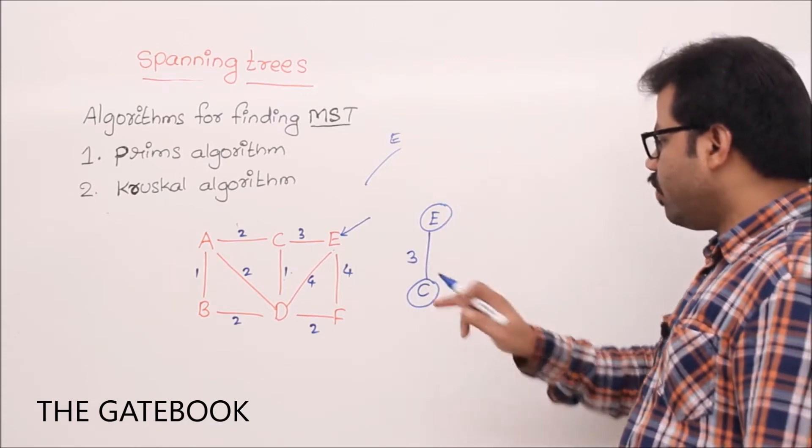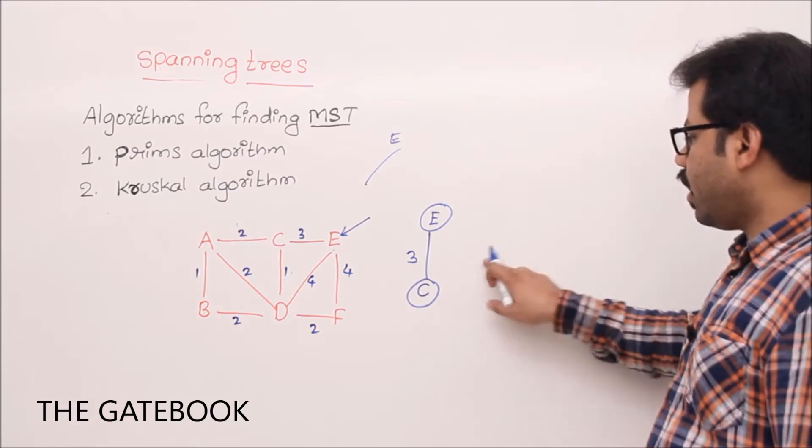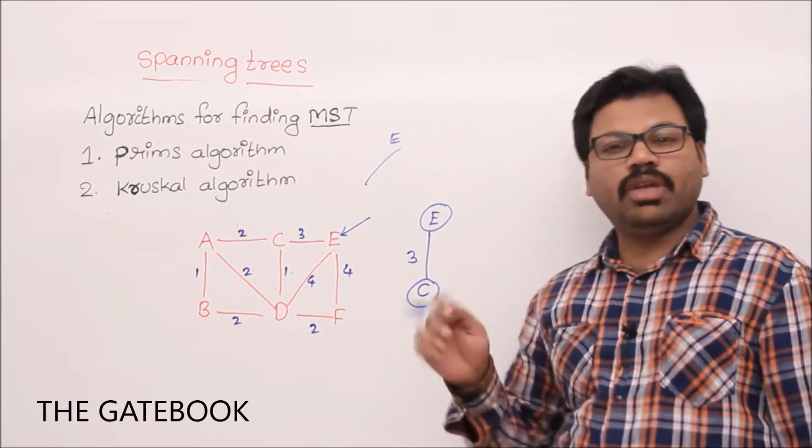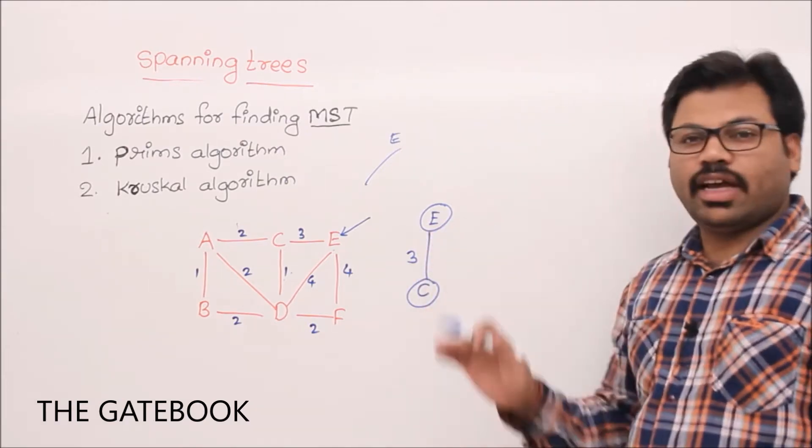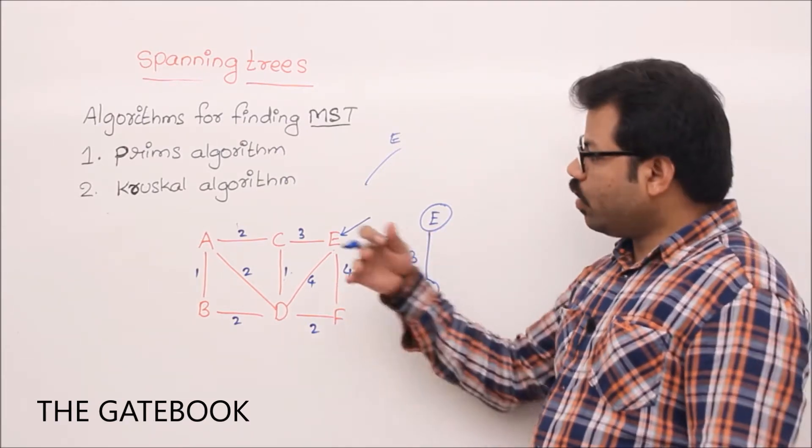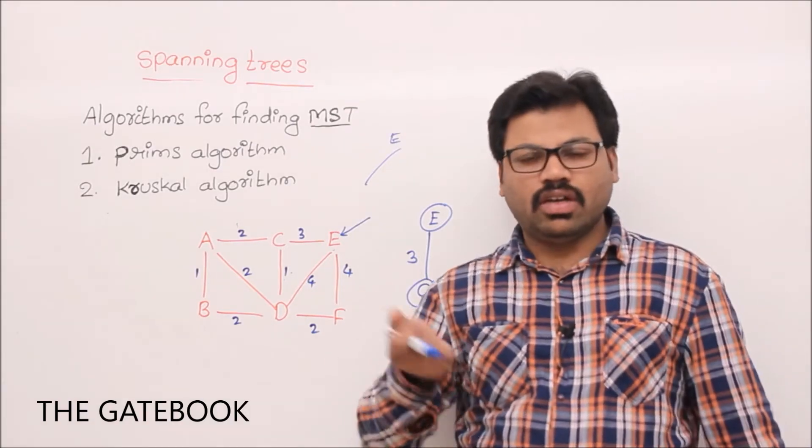Now, C, E are visible vertices. We have to explore all the edges which are connected to E, connected to C, and we have to find out the minimum value. What I do is, rather than doing this one, I go for a different model. I directly go to the graph and pick the minimum edge. Of course, that's not principle of prims.